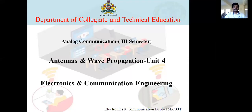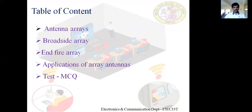Good morning, dear students. Welcome to the second session of Antennas and Wave Propagation. In the last class, we discussed what is an antenna, what is a dipole antenna, its working principle. An antenna is nothing but a piece of wire or hollow conducting rod capable of radiating or receiving electromagnetic waves. A dipole antenna has a maximum length equal to lambda by 2, where lambda is the wavelength of the electromagnetic wave radiated by the antenna.